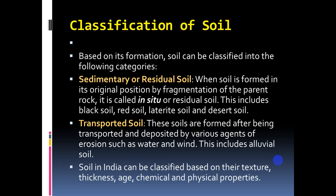Classification of soil: we can classify soil into two categories — residual soil and transported soil. Residual or sedimentary soil is formed in the original position by fragmentation of parent rocks; it is called in-situ or residual soil, and includes black, red, laterite, and desert soils. Transported soil is formed after being transported and deposited by various agents of erosion such as water and wind; this includes alluvial soil. Soil in India can be classified on the basis of texture, thickness, age, and chemical and physical properties.